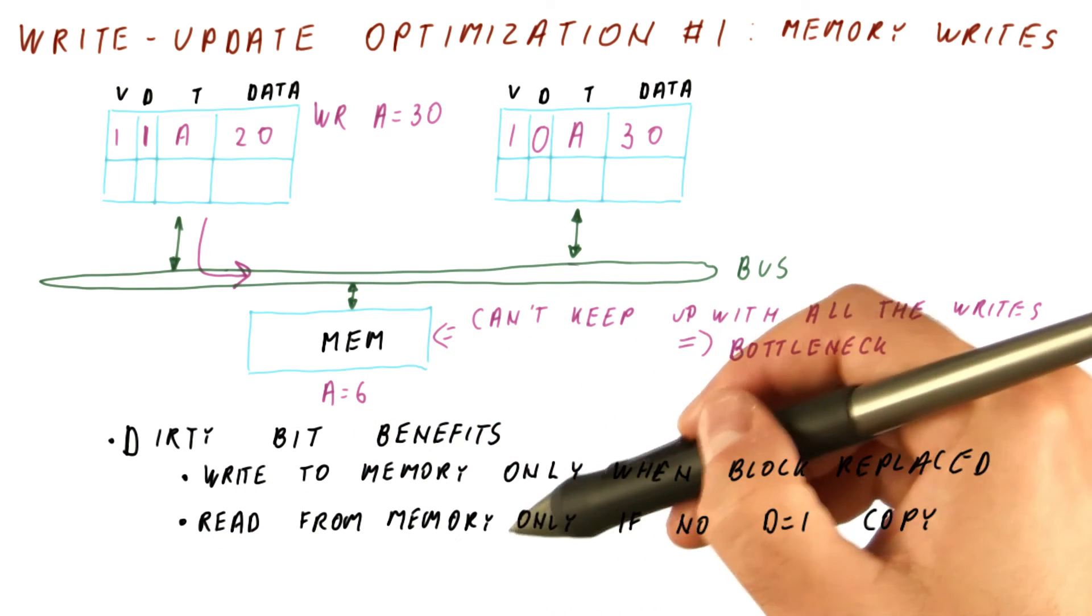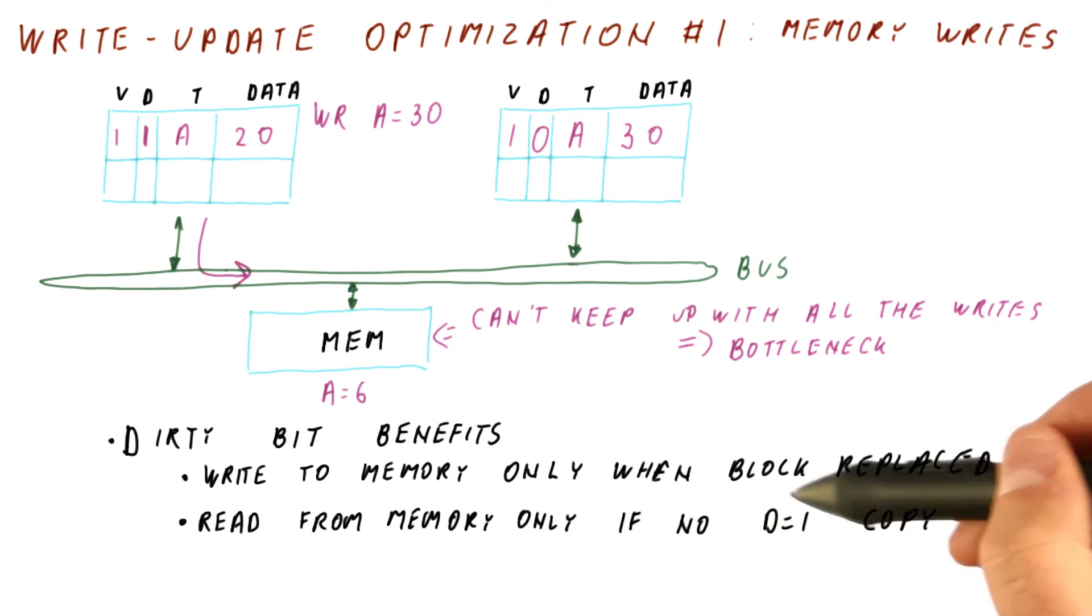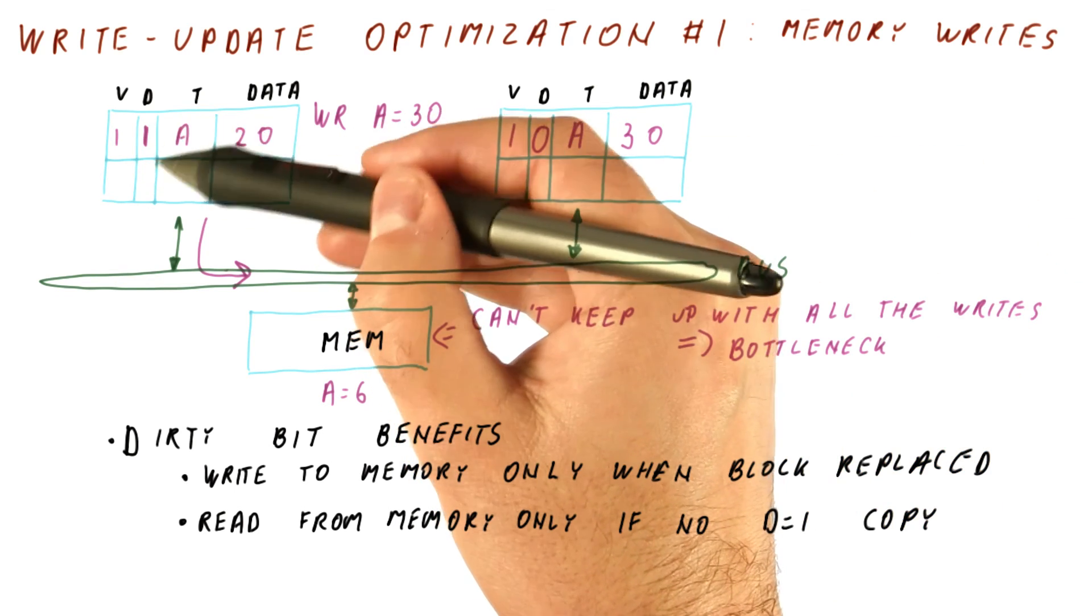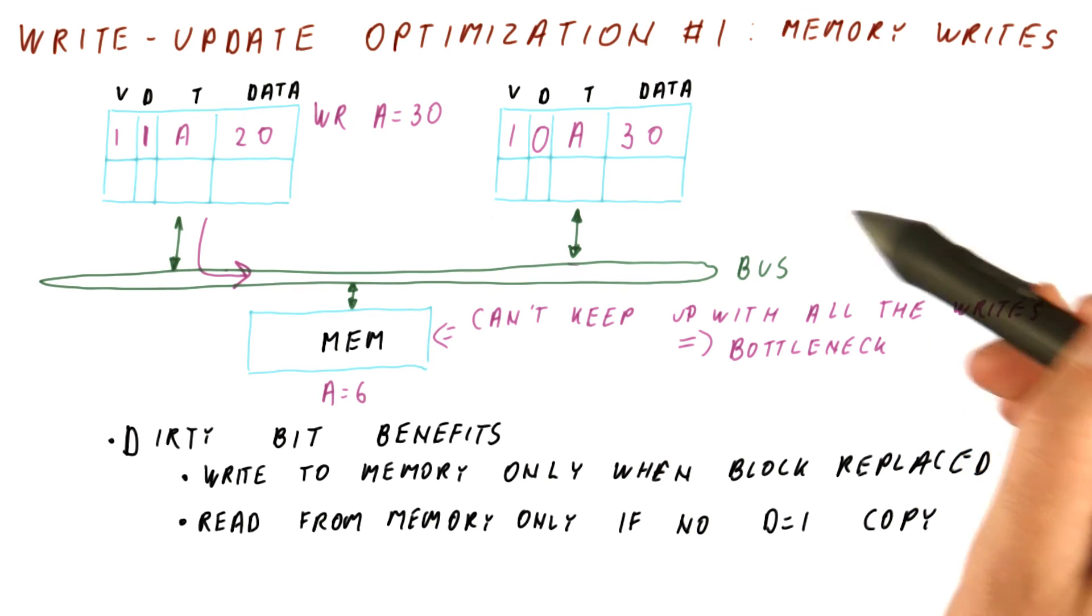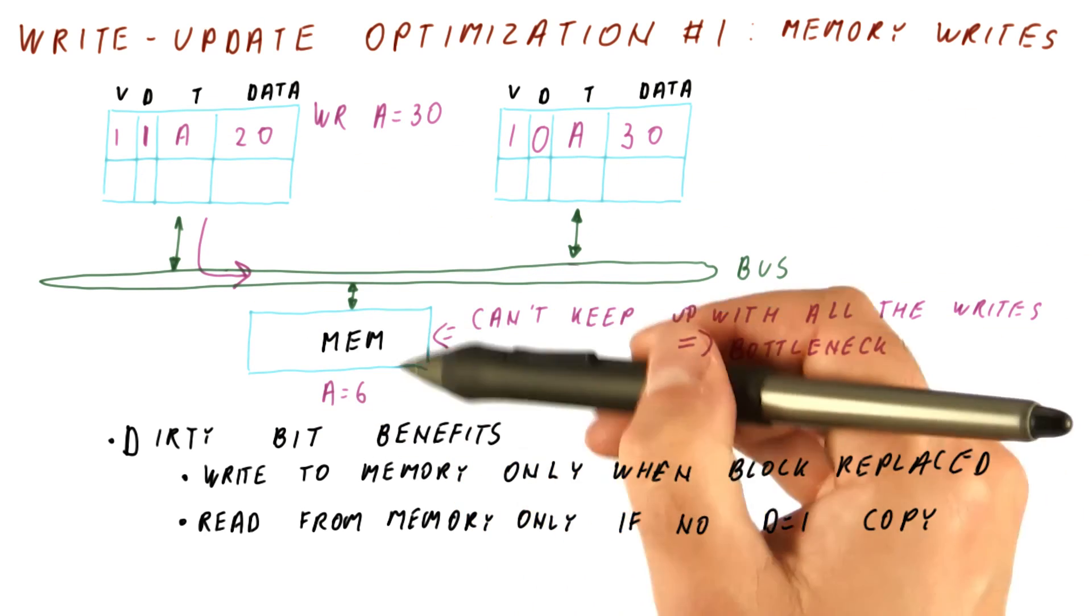And also, we avoid memory reads, because now we allow reads from memory only when nobody has the block in a dirty state. If the block is dirty, for example here, then whoever asks for this block, this is the cache that will provide the value and the memory doesn't need to do that. So we are also saving reads from memory this way.